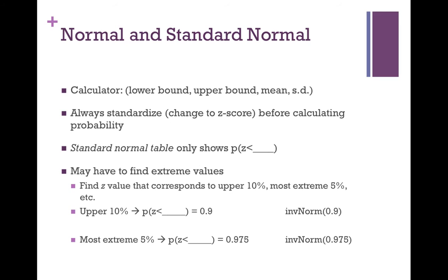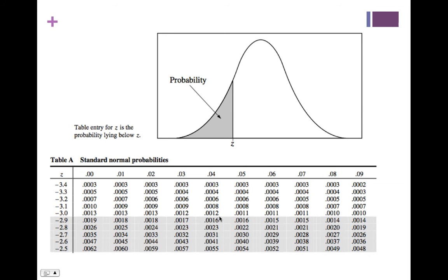You may have to find extreme values. For example: find the z-score corresponding to the upper 10%. The upper 10% means the probability of being lower than that value is 90%, so use invNorm(0.9). For the most extreme 5%, that means 2.5% in each tail. The upper value corresponds to the lower 97.5%, so look up 0.975 on the table or use invNorm(0.975) — that gives the upper bound, and the negative of that is the lower bound. On the table, it's only lower probabilities; to find the probability of being greater than a value, subtract from 1. For example, P(z < −2.94) = 0.0016, so P(z > −2.94) = 1 − 0.0016.